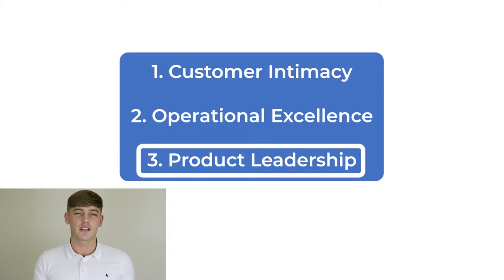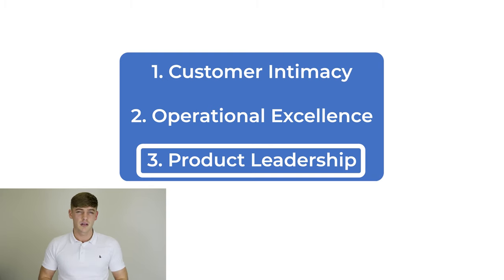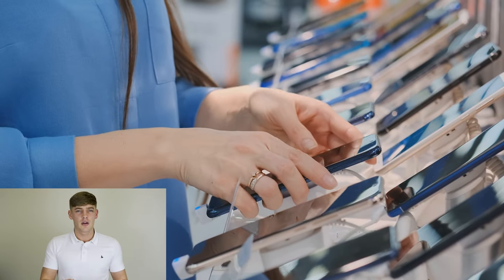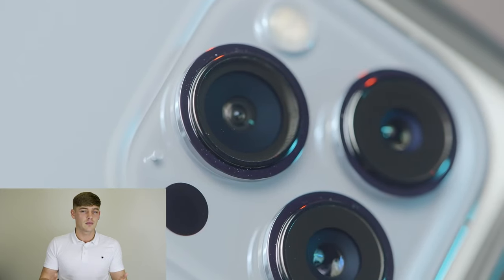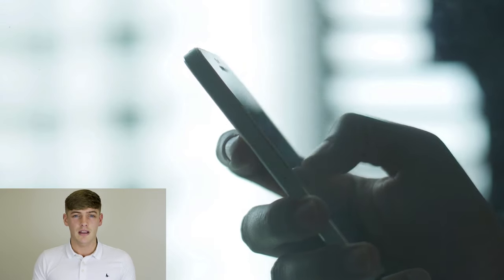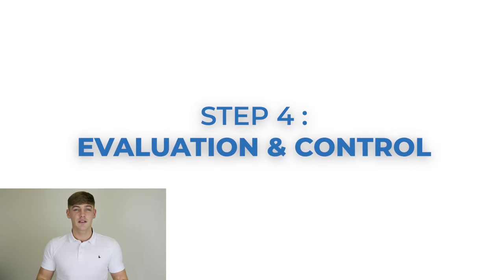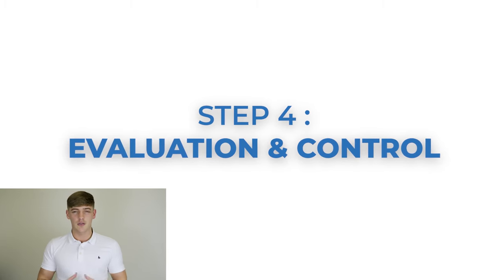The third and final value discipline is known as product leadership. This refers to companies that are so innovative they are constantly bringing out new solutions to their customers' problems. A great example would be Apple, who are constantly innovating, bringing out new features and products each year through the likes of the iPhone. As well as entering new markets, this has allowed them to advance and beat their competitors year on year. This brings us to the fourth step of the Easel Conceptual Model, which is known as evaluation and control.